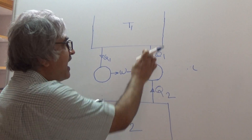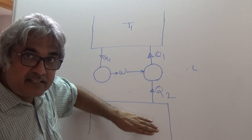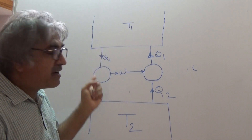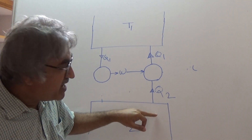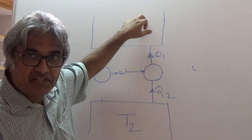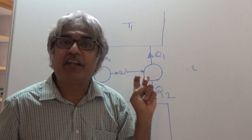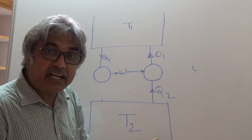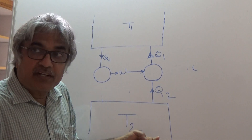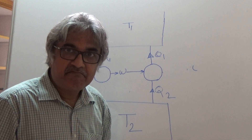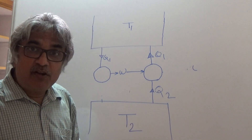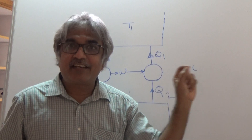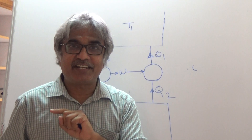Now look at what is happening. The sink is the low-temperature body, the source is the high-temperature body. Heat is being taken from the low temperature and given to the high temperature. Where is the external work input? Between these two devices, are we taking work from anywhere outside? No — there is no external work being taken from the surroundings. This combined device lifts heat from low temperature to high temperature without any external work.